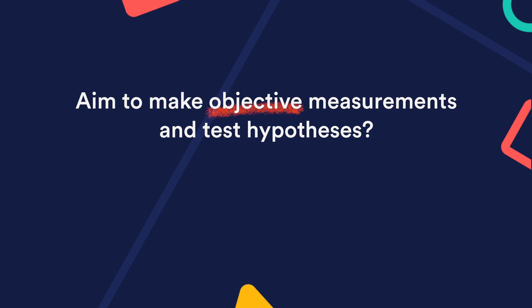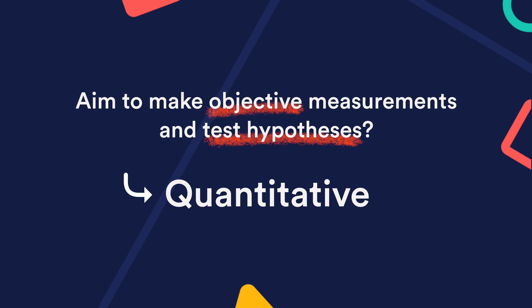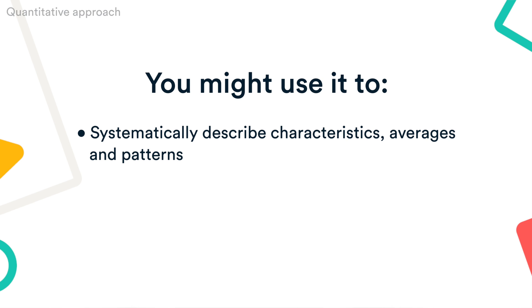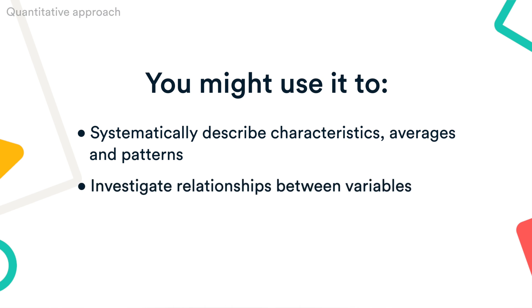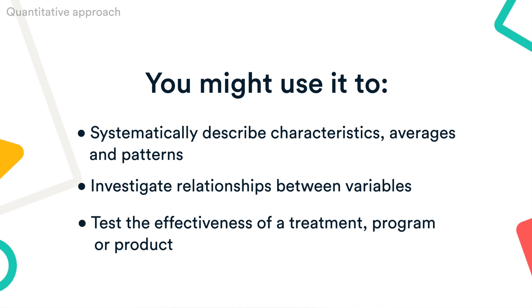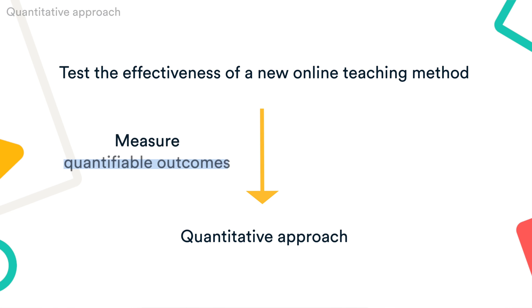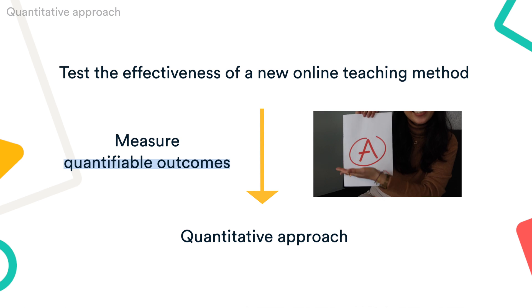Do you aim to make objective measurements and test hypotheses? Then take a quantitative approach. This type of research focuses on numbers and statistics. You might use it to systematically describe characteristics, averages, and patterns, investigate relationships between variables, or test the effectiveness of a treatment, program, or product. For example, if your aim is to test the effectiveness of a new online teaching method, a quantitative approach is most suitable because it allows you to measure quantifiable learning outcomes like grades and test scores.